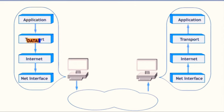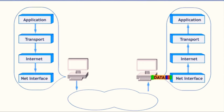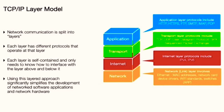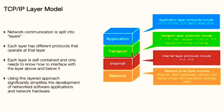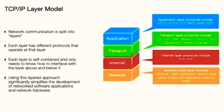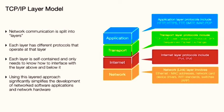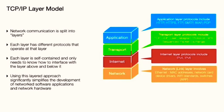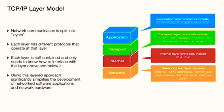Finally, at the top, we have the application layer. This is the layer that interfaces with software applications — like a customer service desk, translating your requests into a language the network can understand, and vice versa. Protocols like the Hypertext Transfer Protocol, or HTTP, which powers the web, and the Simple Mail Transfer Protocol, or SMTP, which enables email, operate at this layer.